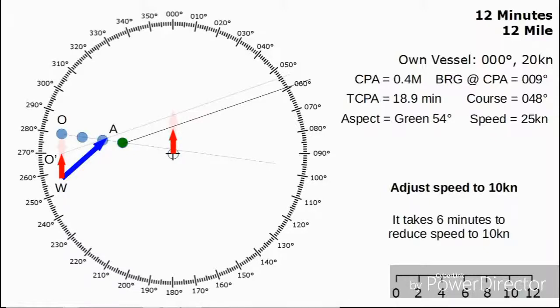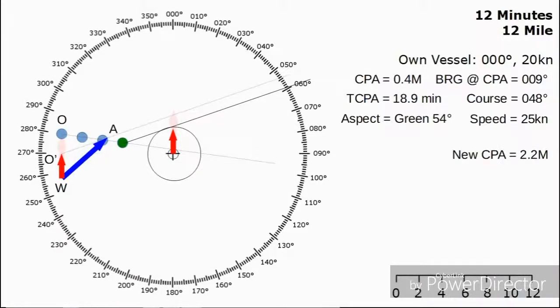With this information, we can measure the new CPA. We're just going to draw a ring out of the center again and measure the radius of that ring, which comes out at 2.2 miles. Our new CPA is 2.2 miles.